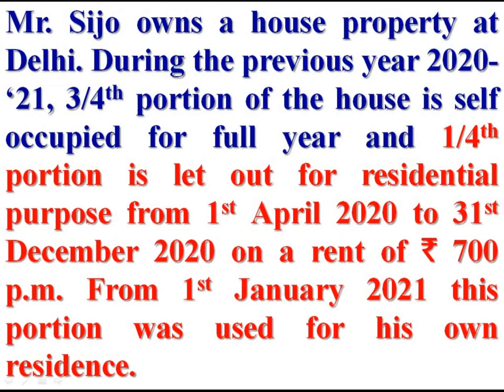The one-fourth portion is let out for residential purposes from 1 April to 31 December — that is nine months: April, May, June, July, August, September, October, November and December. From 1 January onwards, for January, February and March — three months — this portion was used for his own residence, meaning self-occupied. During the previous year, this one-fourth portion was let out for nine months and was self-occupied for three months.